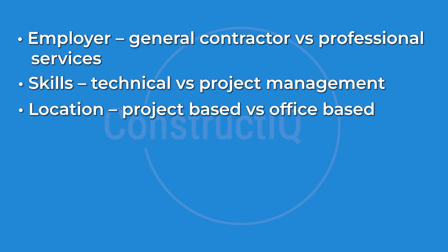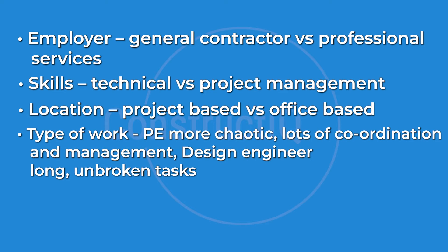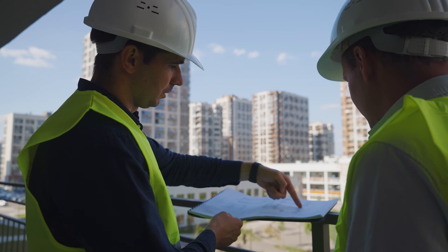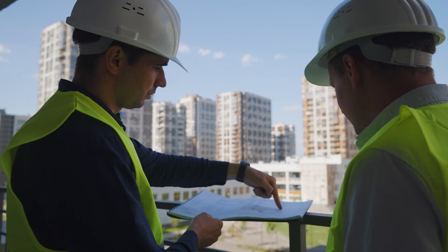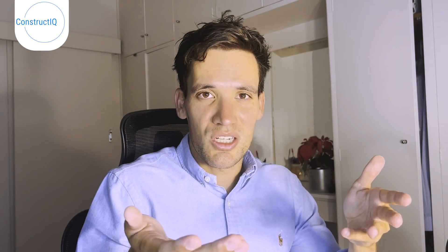Number four is location, which is quite important if you're thinking about work-life balance. The project engineer is based on site — on a construction project, wherever that may be. Design engineers are typically based in the office. Number five is the type of work. Design engineers typically do large stints of technical work solving engineering problems, while project engineers are working with lots of different people coordinating and getting things done. The work for a project engineer is typically much more chaotic, unstructured, and administrative, whereas for a design engineer it's much more technical.